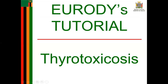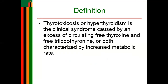Welcome to today's lesson. Today I'm going to look at a condition from the endocrine system which is thyrotoxicosis — some of you may know thyrotoxicosis as hyperthyroidism, so it's one and the same condition. Thyrotoxicosis is an endocrine system condition resulting in excess free thyroxine and free triiodothyronine, characterized by increased metabolic rate and other symptoms such as heart palpitations, nervousness, or insomnia.